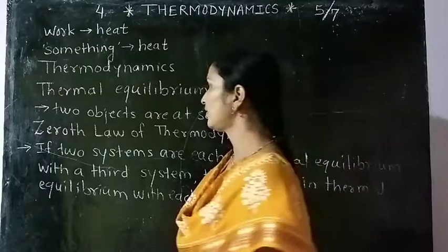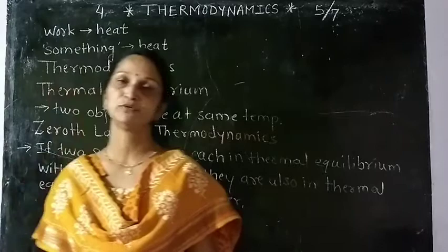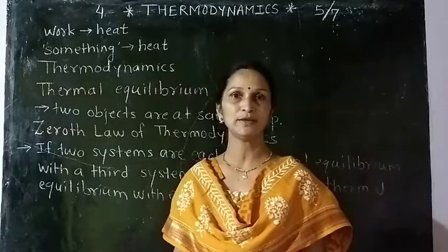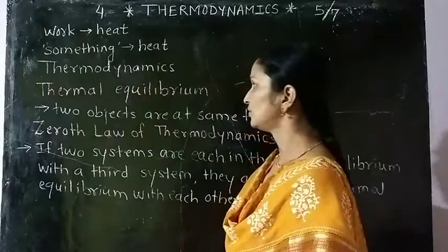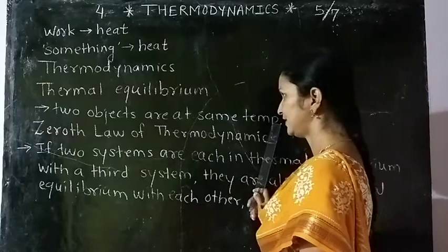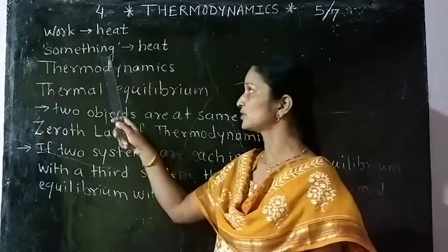When a hot body is kept in contact with a cold object, heat is transferred from the body at higher temperature to the body at lower temperature. This process continues until both objects acquire the same temperature — that condition is known as thermal equilibrium. At thermal equilibrium, there is no need to transfer heat.